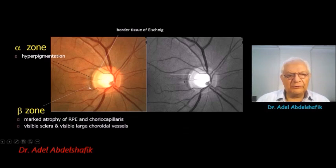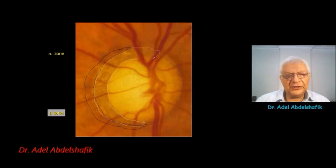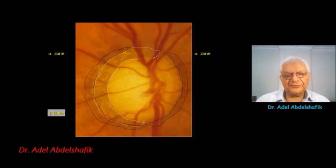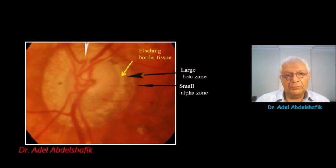Here you can see the zone of hyperpigmentation — this is alpha zone — then irregular pigmentation — this is beta zone. Just inside the peripapillary atrophy, this is the limit of the neural tissue. On this side, you can see only alpha zone. In this example: hyperpigmentation, irregular pigmentation, border tissue, then the disc will start from here.